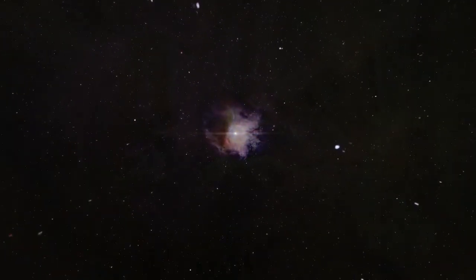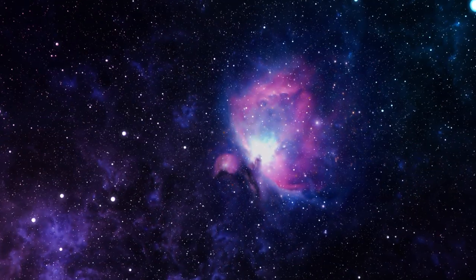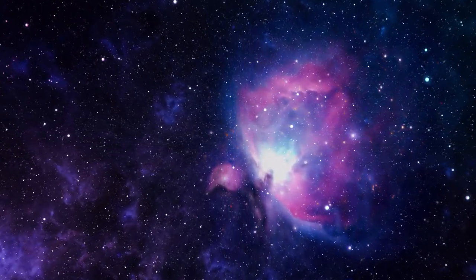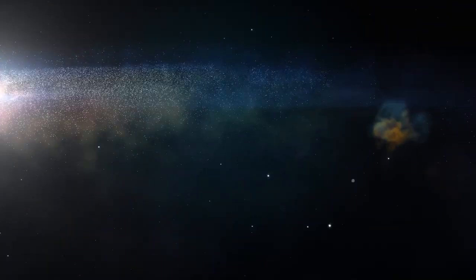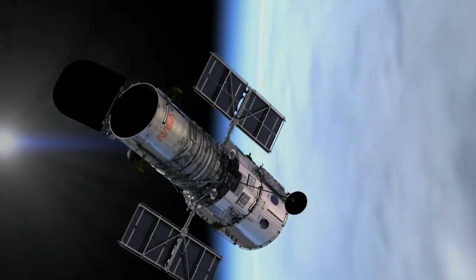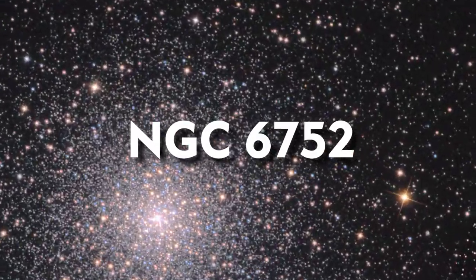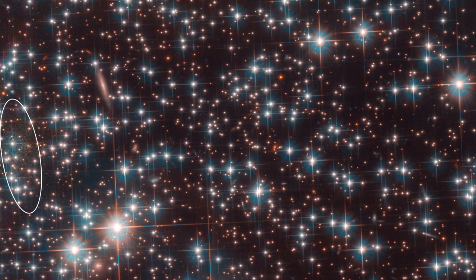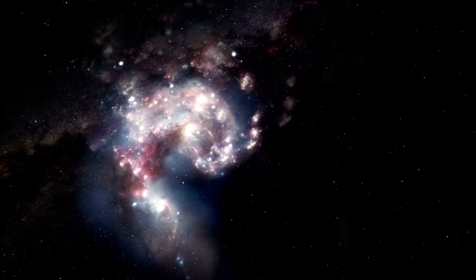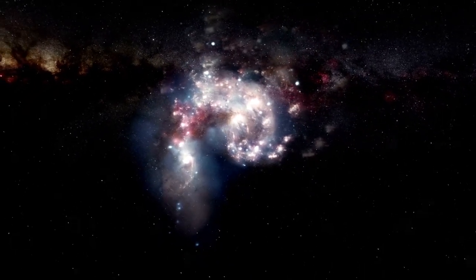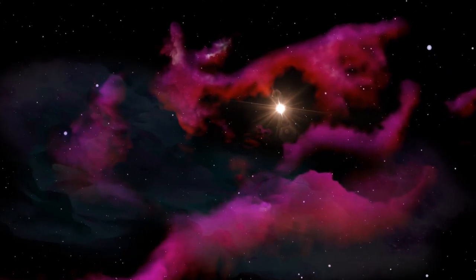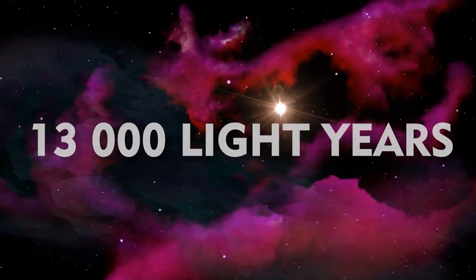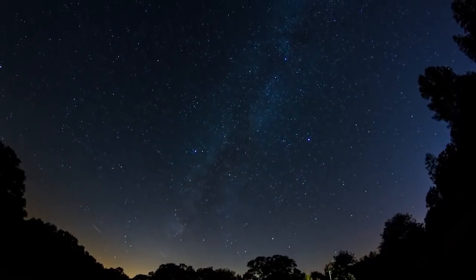Sometimes the Universe surprises us with unexpected gifts. The Universe is vast, but it has so many objects that it can't help but stack them on top of one another. This was precisely the case when the Hubble Space Telescope was used to photograph NGC 6752, a globular star cluster. This cluster is 13,000 light-years away from us in the Milky Way galaxy. Scientists were both surprised and excited to discover a previously unknown galaxy hidden behind a cluster of stars. A spheroidal dwarf star is about 30 million light-years away, which means it is about 2,300 times farther away than the cluster in front of it. All thanks to the JWST.